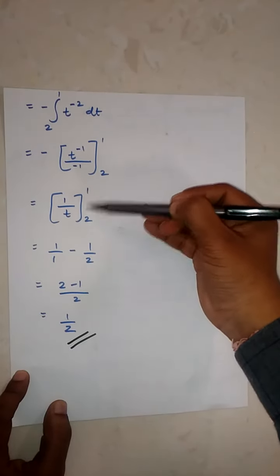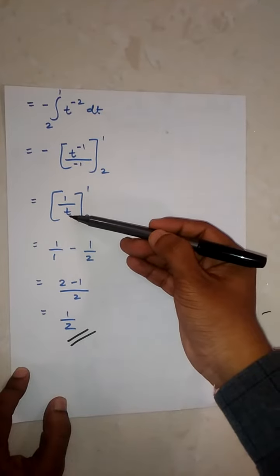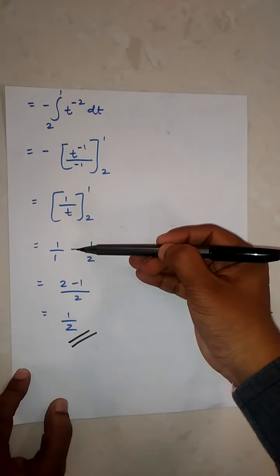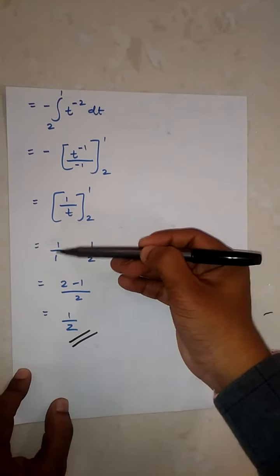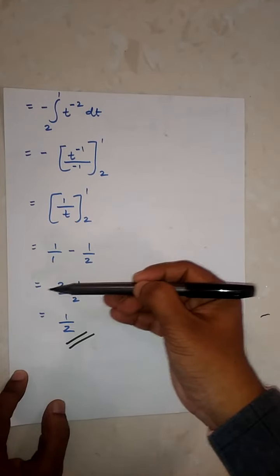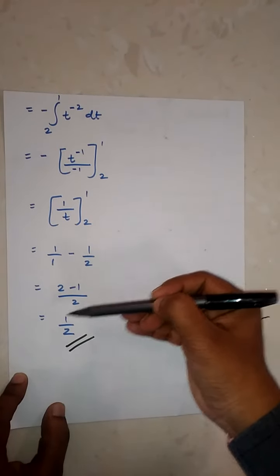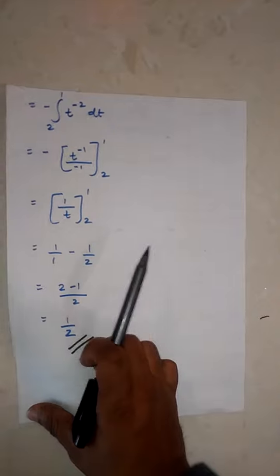We replace t with the upper limit minus the lower limit: 1/1 minus 1/2, which equals (2-1)/2, which equals 1/2. That is the final answer.